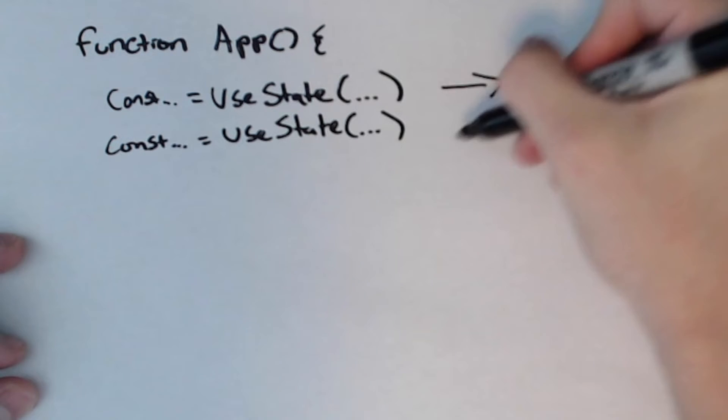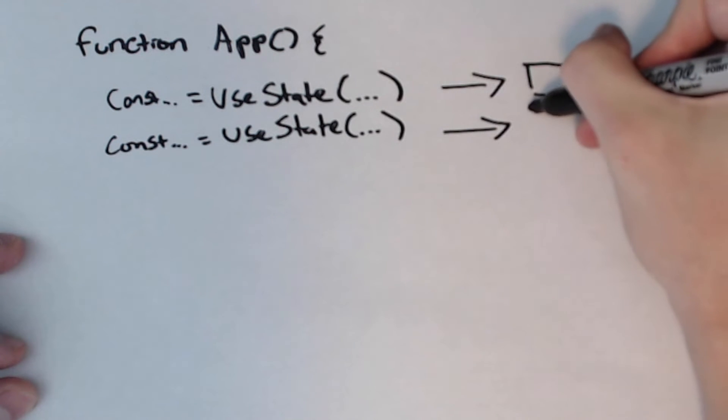Internally, under the hood, React creates this array-like structure where each useState has its own box in a contiguous array. Like this.